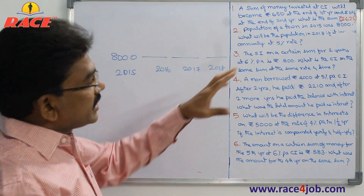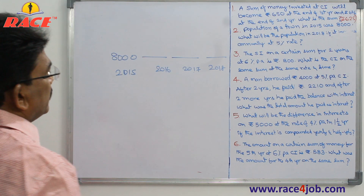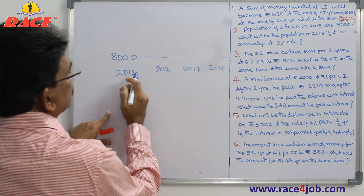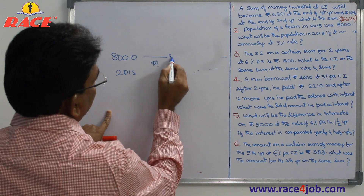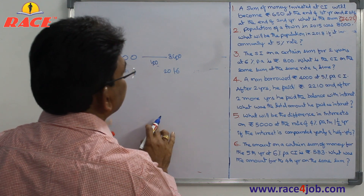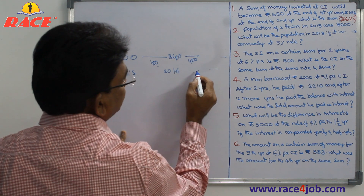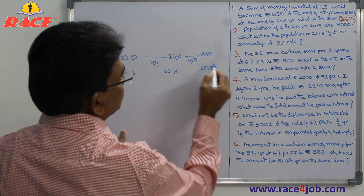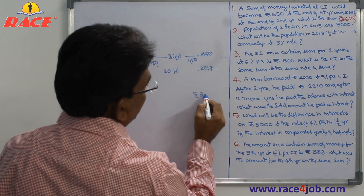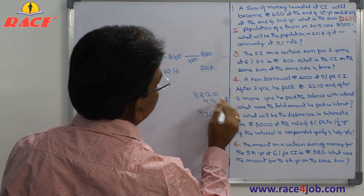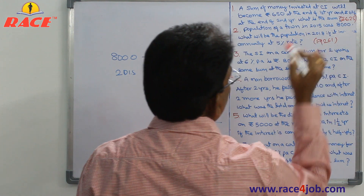The rate is 5%, so calculation is easy. In 2016: 5% of 8000 is 400, so population becomes 8400. In 2017: 5% of 8400 is 420, so population becomes 8820. In 2018: 5% of 8820 is 441, so population becomes 8820 plus 441 which is 9261. So 9261 is the population in 2018.